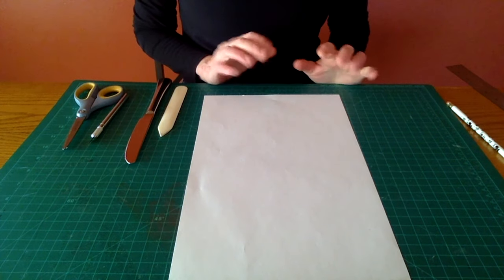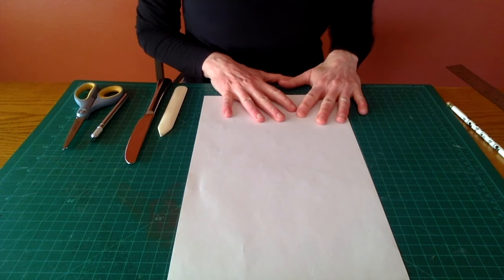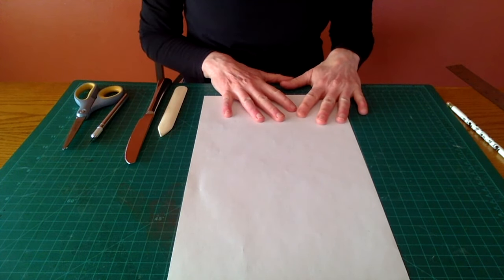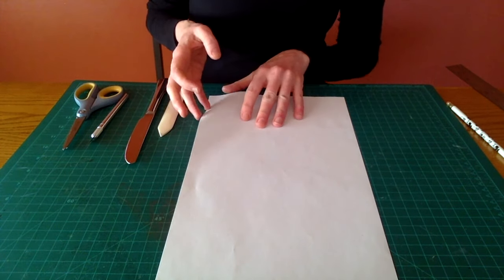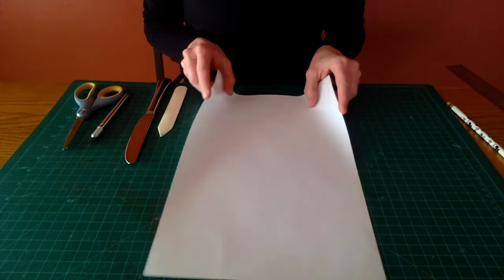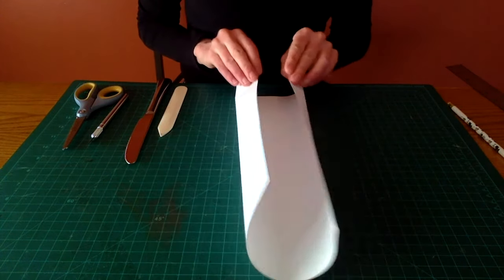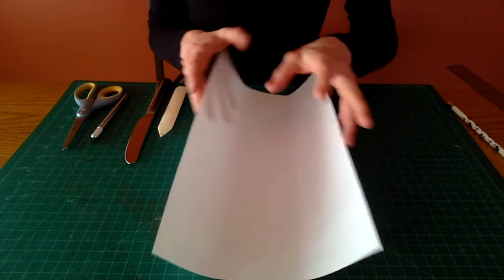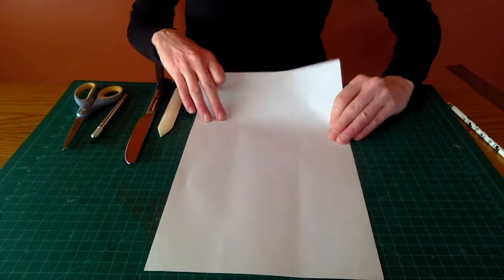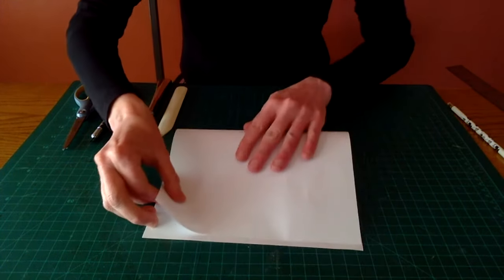The first thing we're going to do is divide our paper up into 12 sections, and our first step will be to divide it into thirds vertically. You can either eyeball it, or you can be more precise by doing this trick to measure it.